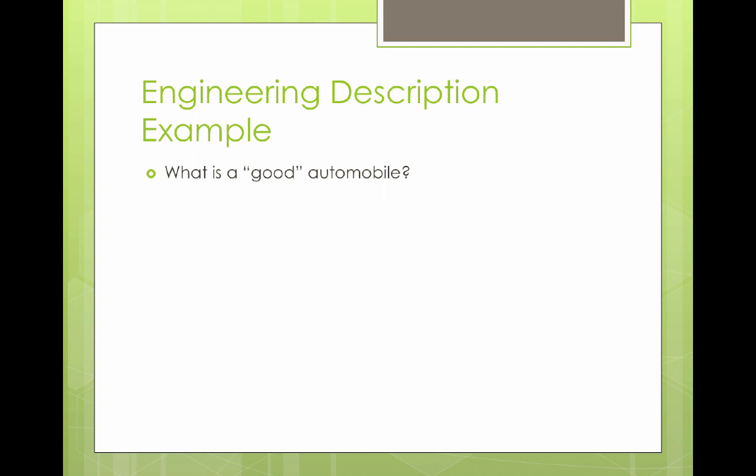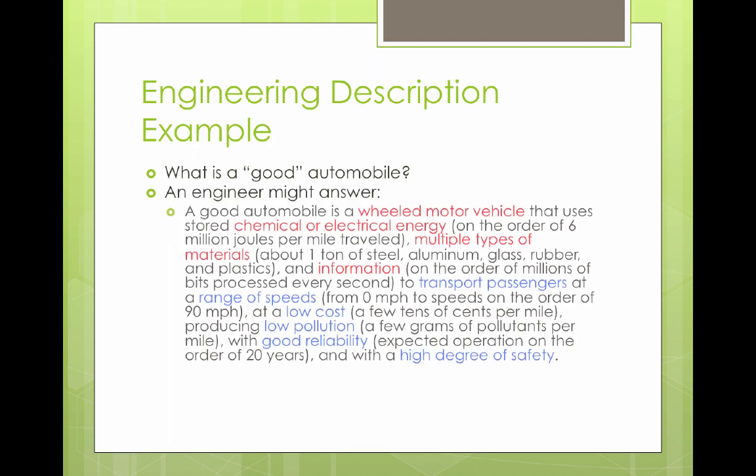Here's an example. If you ask an engineer what is a good automobile, you might get an answer like this: A good automobile is a wheeled motor vehicle that uses stored chemical or electrical energy on the order of 6 million joules per mile traveled, multiple types of materials — about 1 ton of steel, aluminum, glass, rubber, and plastics — and information on the order of millions of bits processed every second, to transport passengers at a range of speeds from 0 mph to speeds on the order of 90 mph.